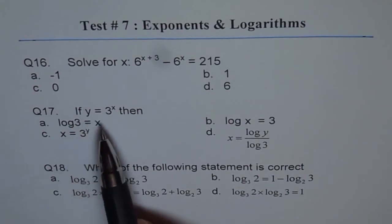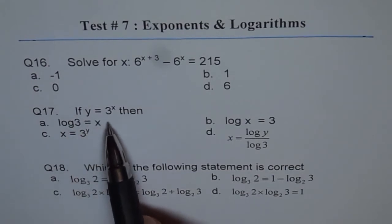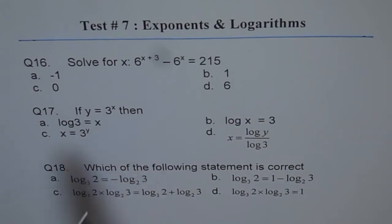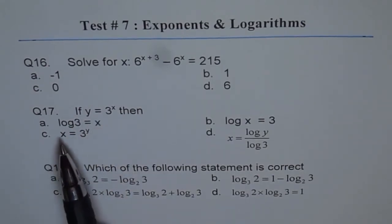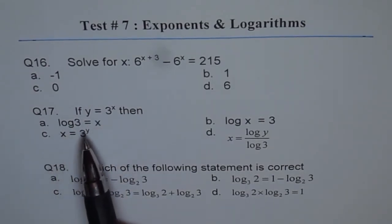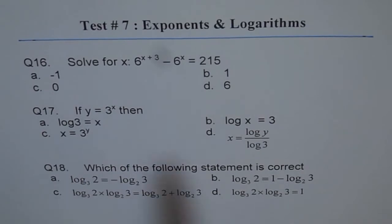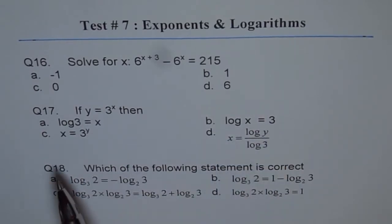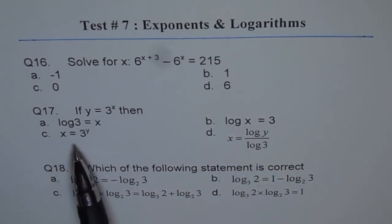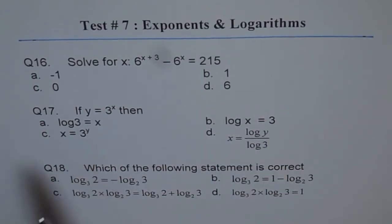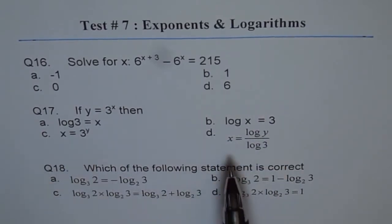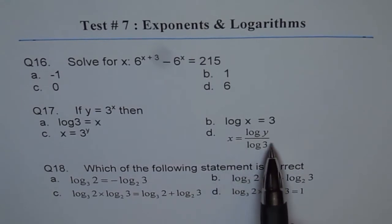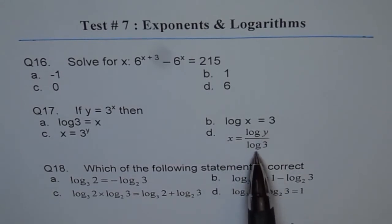If y equals 2 times 3 to the power of x, then which is correct: log 3 equals x, or log x equals 3, or x equals 3 to the power of y, or x equals log y over log 3? Those are your options.